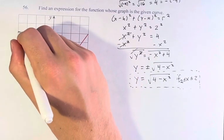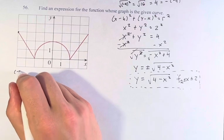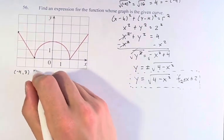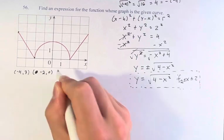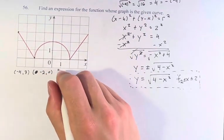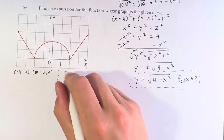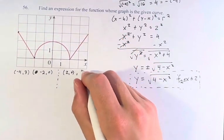So let's take some points. We have (-4, 3) and, sorry, (-2, 0). And for this point, for this line, we have (2, 0) and (4, 3).